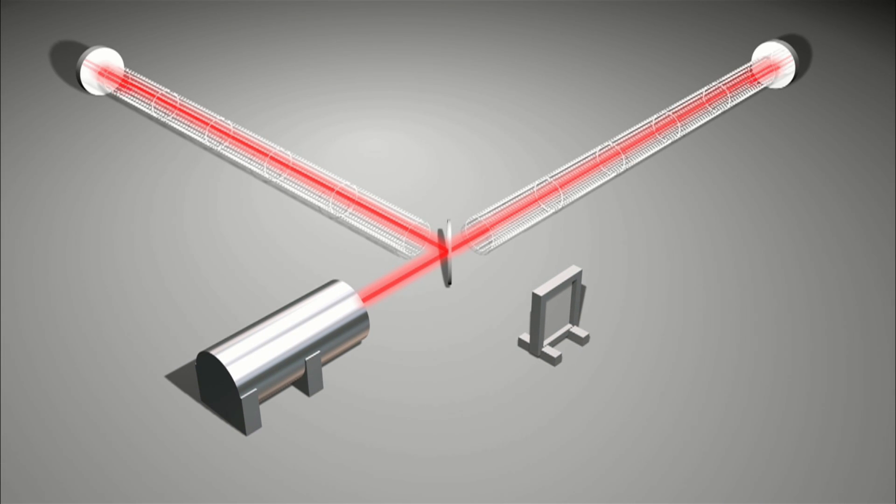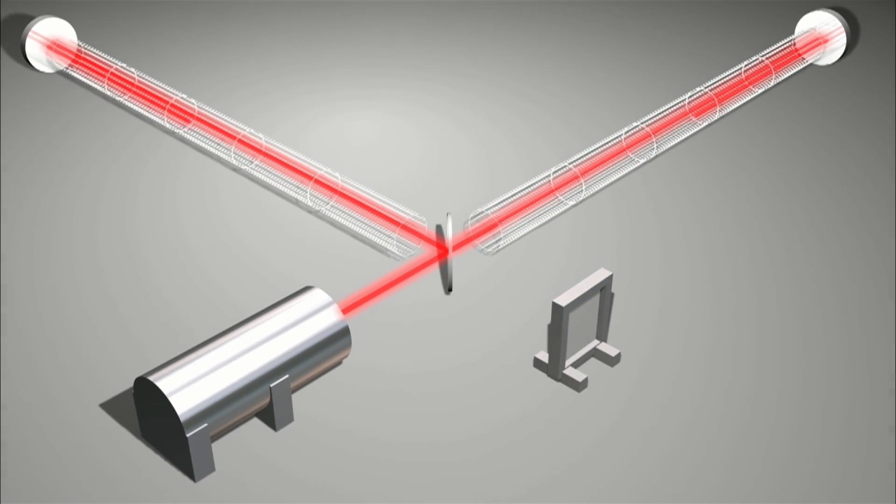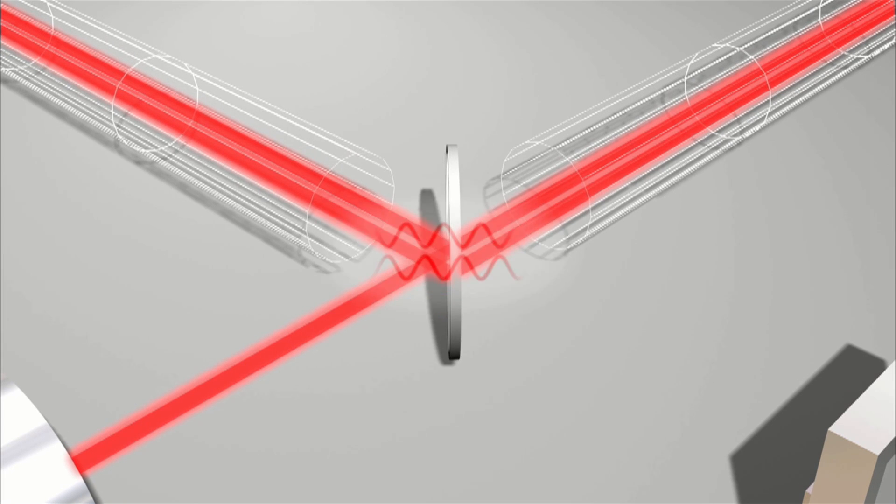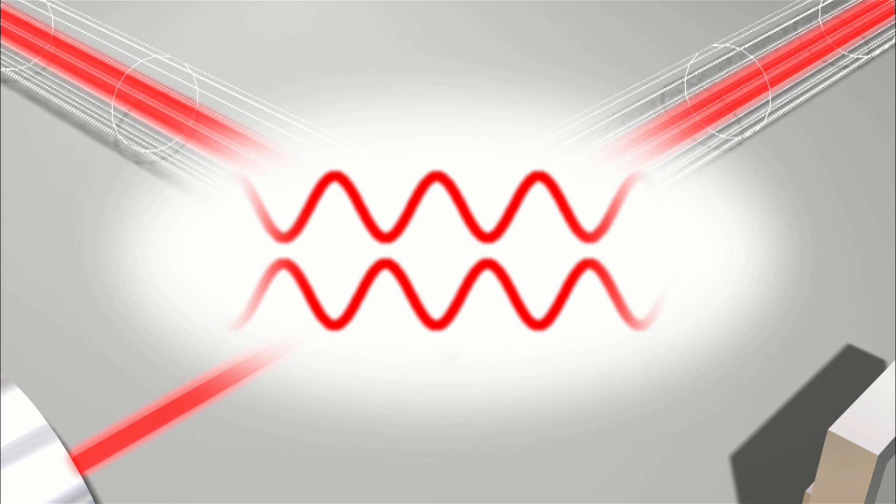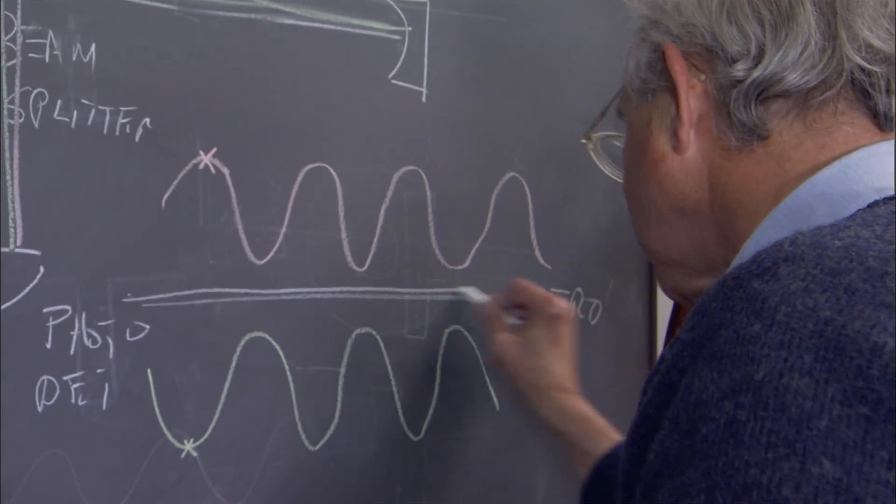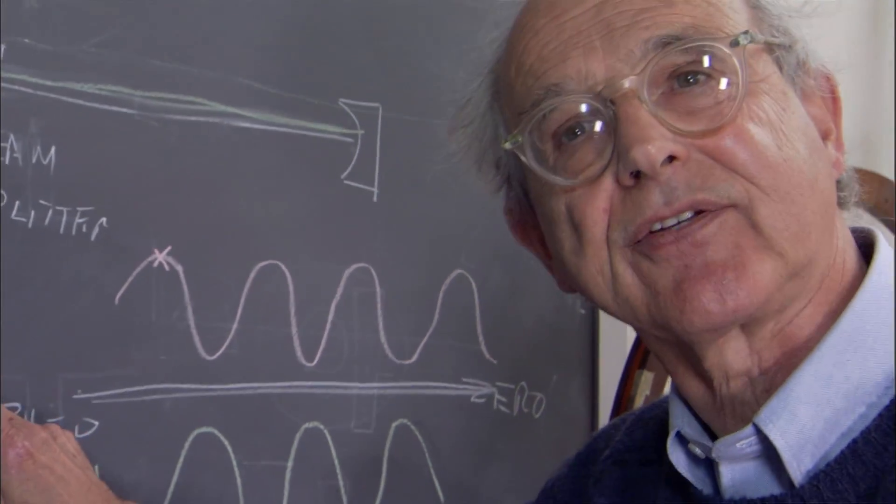The two beams bounce off mirrors and recombine back at the base. The light waves come back lined up in such a way that they cancel each other out. And you add them together, you get nothing, you get a zero, a big fat zero. No light gets detected at the photodetector.